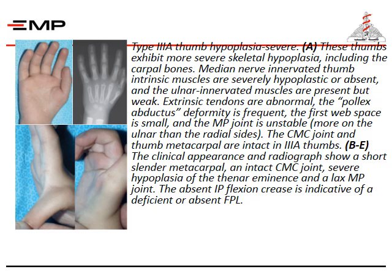Type three-A thumb hypoplasia — severe: these thumbs exhibit more severe skeletal hypoplasia including the carpal bones. Median nerve-innervated thumb intrinsic muscles are severely hypoplastic or absent, and ulnar-innervated muscles are present but very weak. Extrinsic tendons are abnormal. The first web space is small and the metacarpophalangeal joint is unstable. The carpometacarpal joint and the thumb metacarpal are intact in type three-A thumbs.